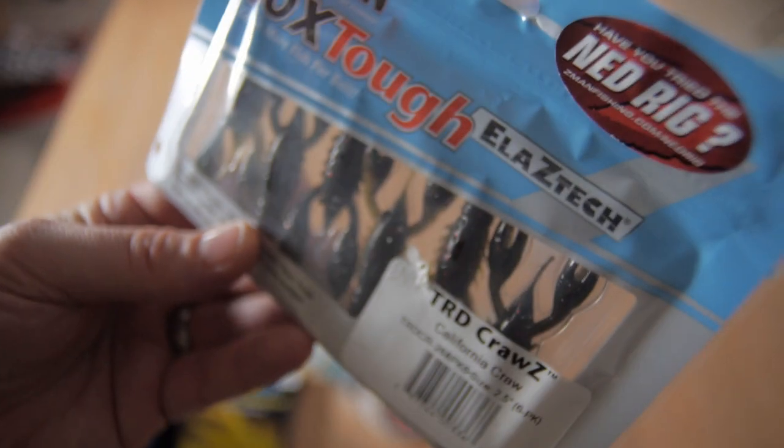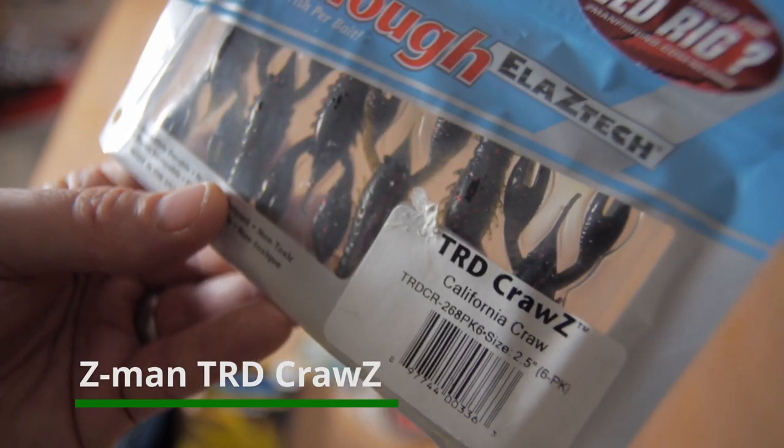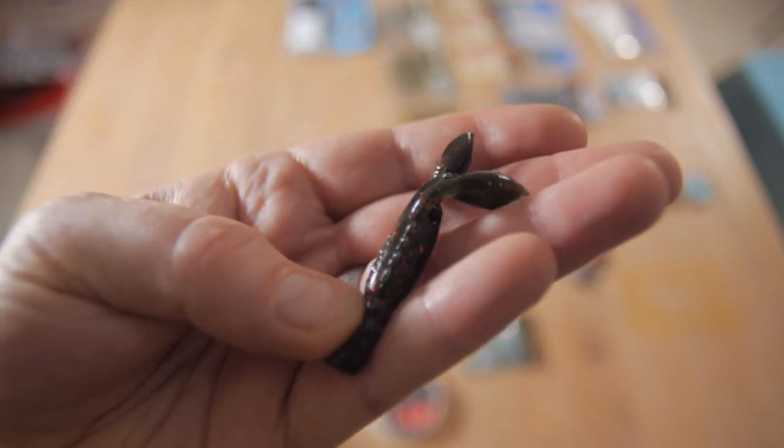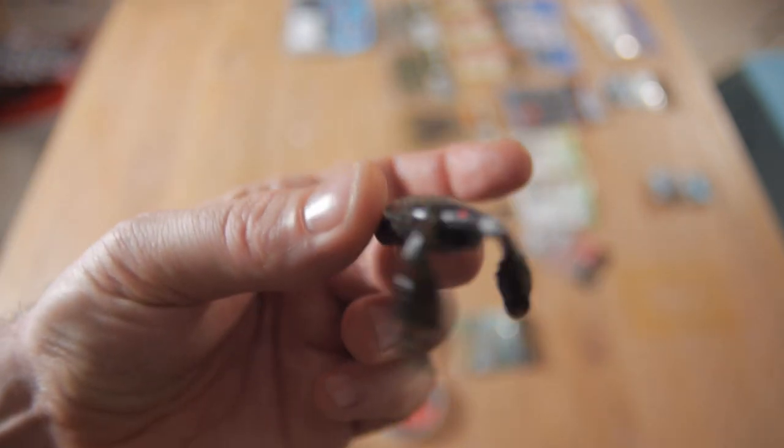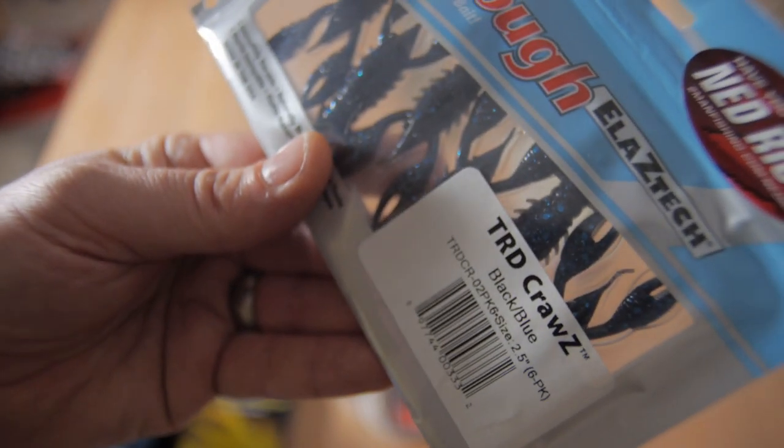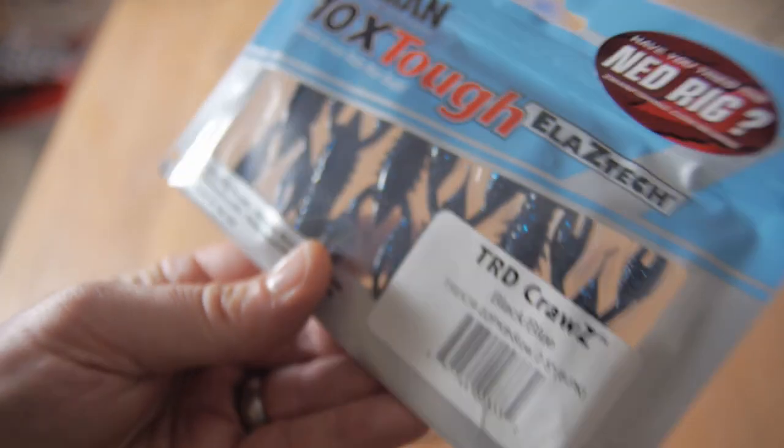I thought I'd give some crawl baits a go as well. These are TRD Craws—they're like a crayfish imitation. Fish those on the Ned rigs. They float so they're up in their attack or defense position with their claws up. Apparently big perch love those, so we'll be giving those a go. Nice detail on these as well. Next up, same TRD Craws just in a slightly darker color, again for those really colored water days, just more of a profile.